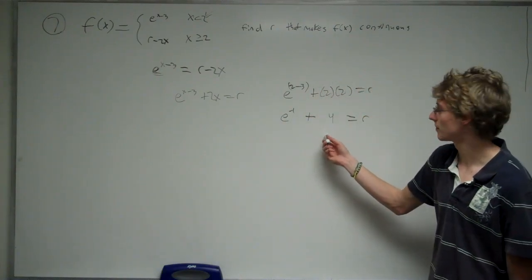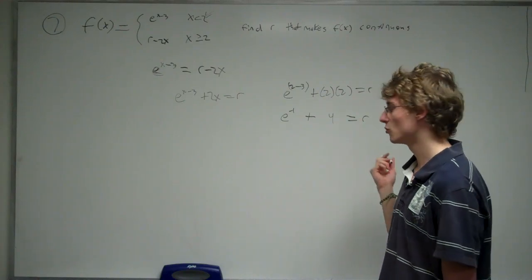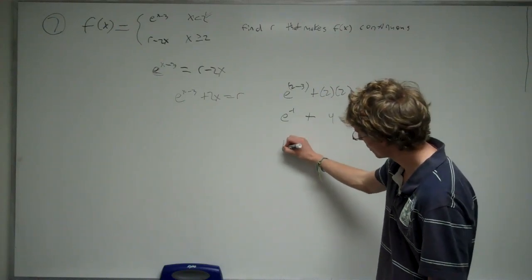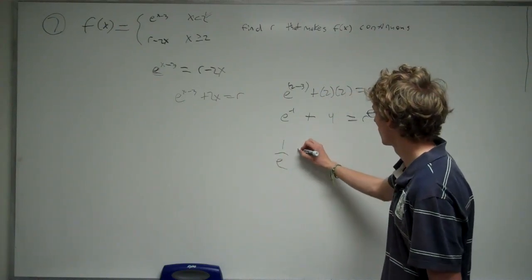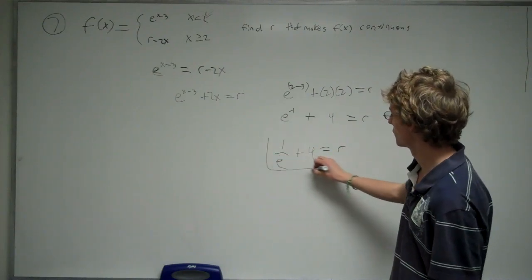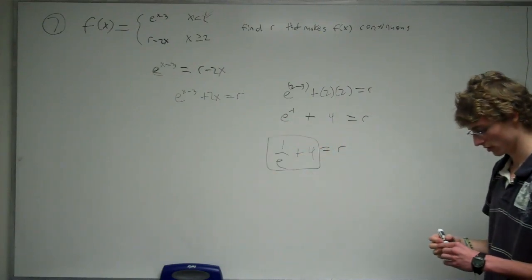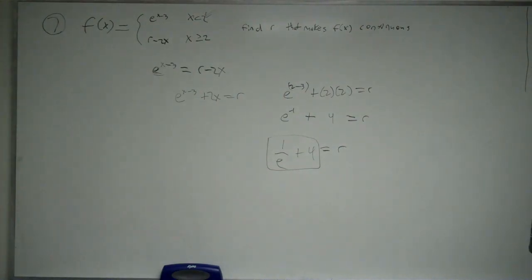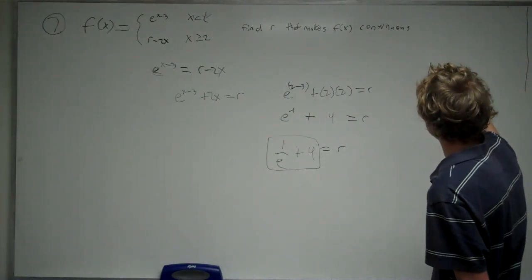So that's what r equals. Now, e to the negative one can be rewritten as one over e. So then our final answer is one over e plus four. And that corresponds to answer choice e.